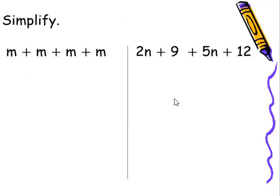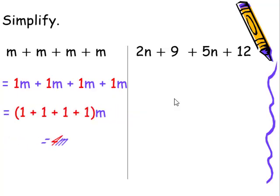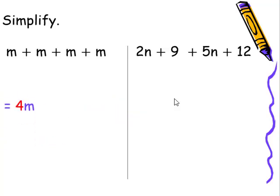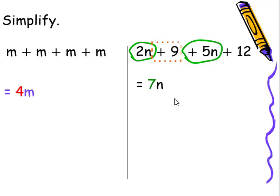So simplify. Try to make sure you can do these two before I begin. If a variable doesn't have a coefficient visible, there's always an invisible one. So in this case, all we have to add all coefficients and we get four m. There's no need to show those first two steps. In this case, we have a like term two n plus five n, and this would give us seven n. And then we have a plus nine and a plus 12, which would give us plus 21.